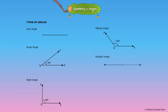Straight angle: An angle which measures 180 degrees is called a straight angle. One straight angle is equal to two right angles. For example, angle PQR equal to 180 degrees is a straight angle.